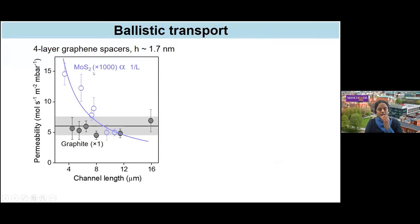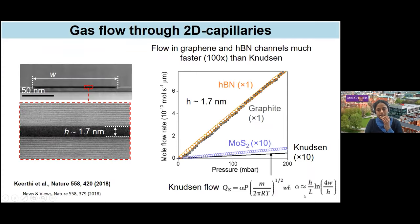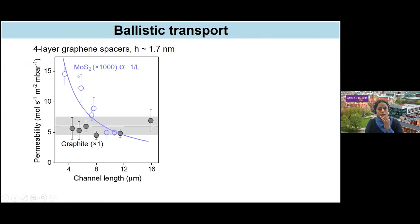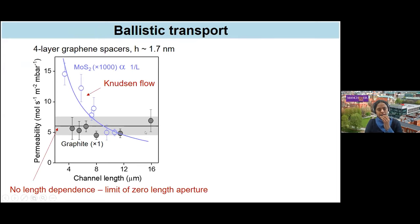To understand this, we did a length variation — same height but varying length. For graphite capillaries, there is no difference in flow from short to long channels, whereas for MoS2 capillaries there is a clear inverse-length dependence in permeability, as expected from the Knudsen formula. Molybdenum disulfide clearly follows the Knudsen description, whereas graphite and boron nitride do not — the length of the capillary doesn't matter within the tested length ranges.